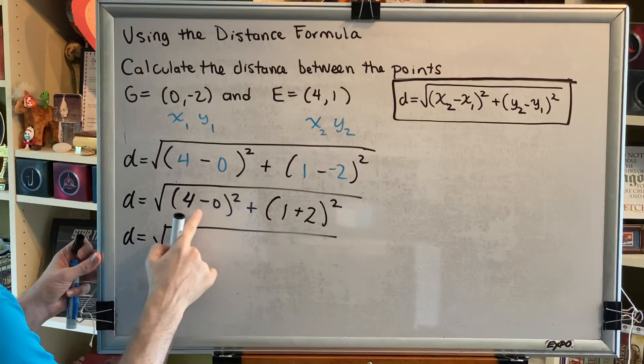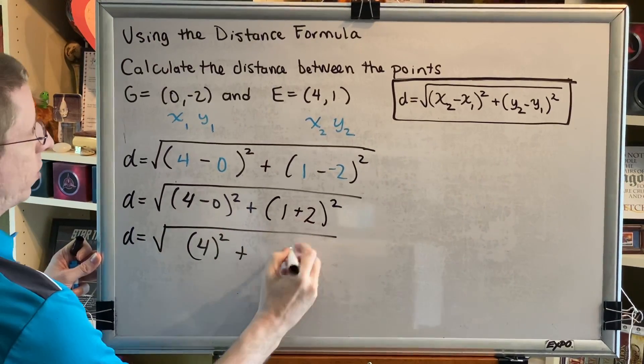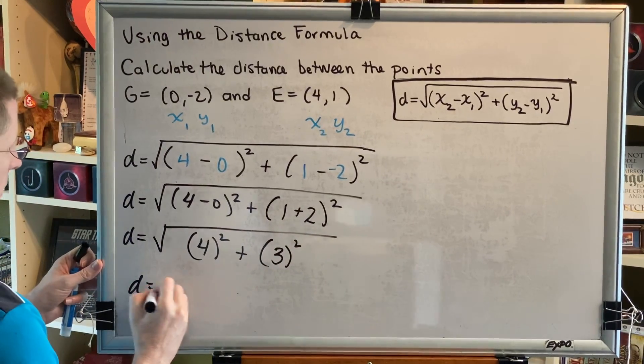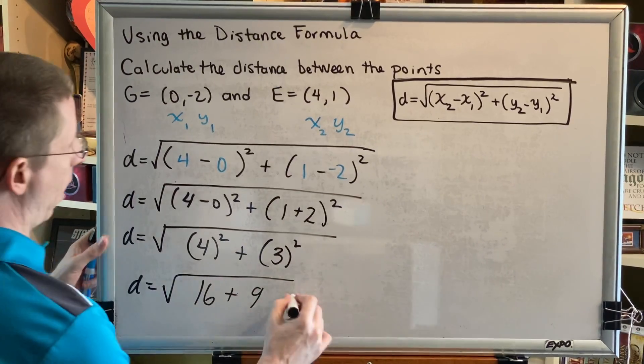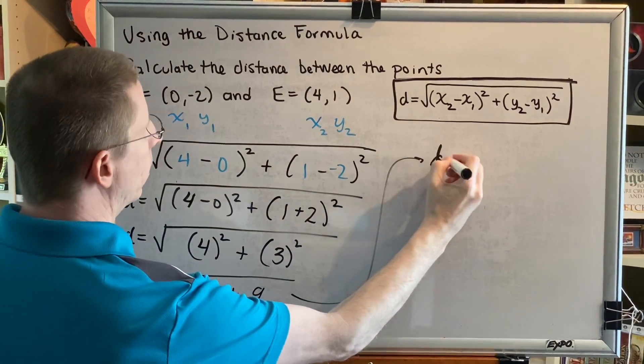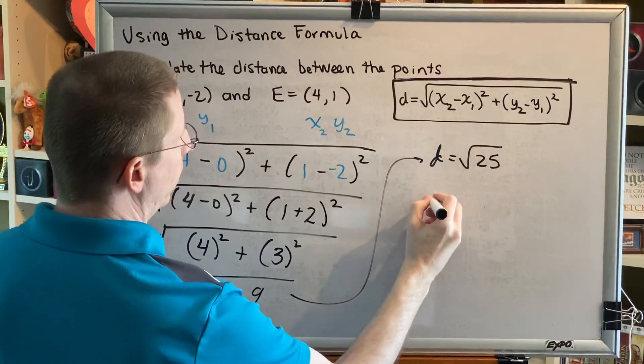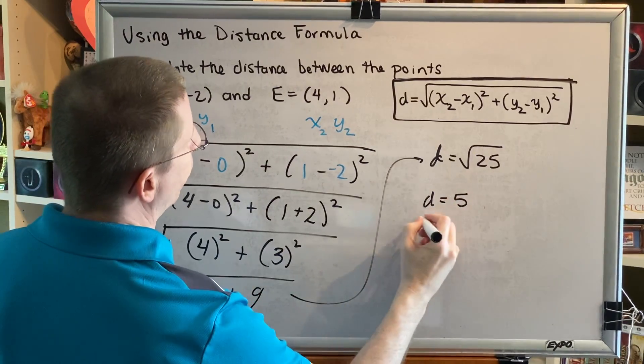Alright, now we're going to subtract and add. 4 minus 0 is 4, 1 plus 2 is 3, 4 squared is 16, 3 squared is 9, 16 plus 9 is 25, and the principal square root of 25 is 5.